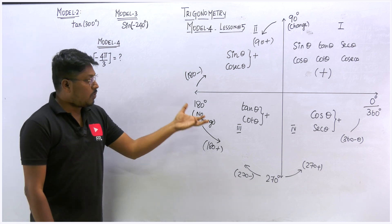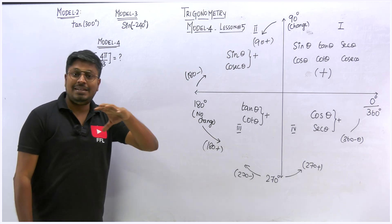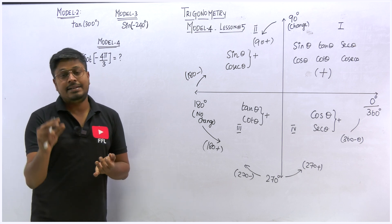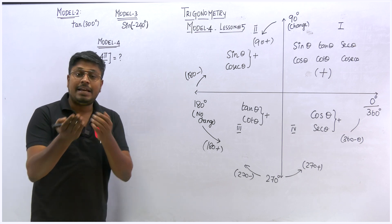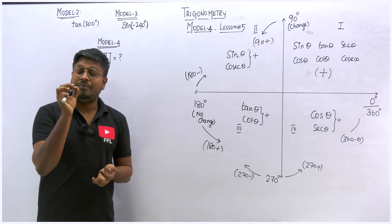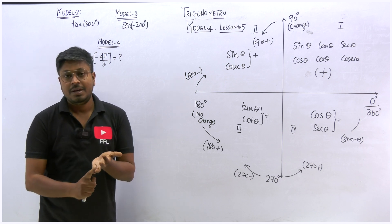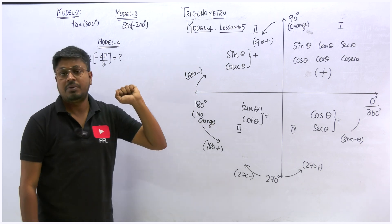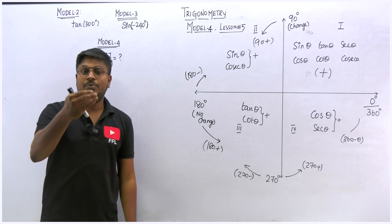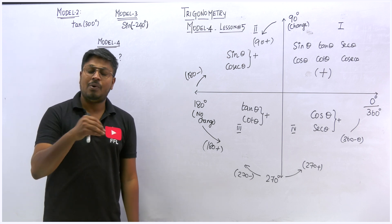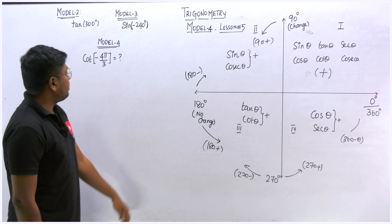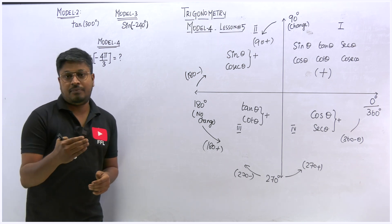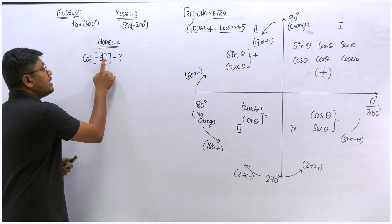Before watching this video, do not forget to watch my trigonometry series from lesson number 1. Lesson 1 is the introduction; lesson 2 covers trigonometrical identities and the basic table — sin 30, sin 45, and the trigonometrical ratios. In this lesson we solve a question on model number 4, which contains pi.